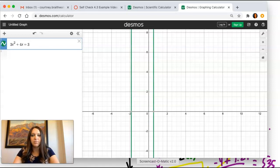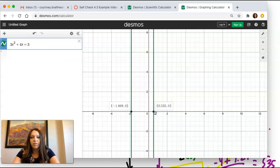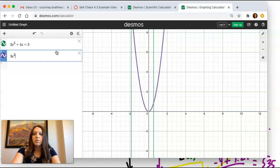You're going to get the same answer. So if I have it original, there's my negative 1.8 and my 0.535. So remember, what we're doing is we're solving for the x-intercepts.